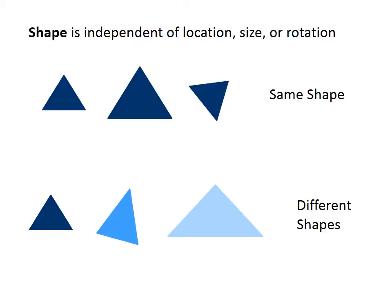In morphometrics, shape is a technical term used to describe the form of an object, such as a fossil specimen, independent of the location, size, or orientation of that object. For example, the triangles in the upper row all have the same shape despite being located at different positions on the screen, having different sizes, or being rotated to varying orientations. All three triangles in the bottom row, however, likewise differ from each other in their location, size, and orientation, but all three are also different shapes because their height-to-width ratios differ.